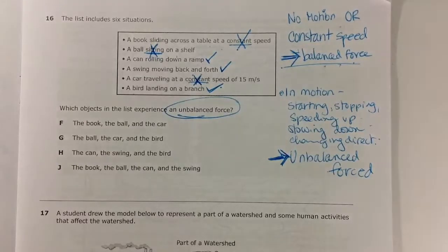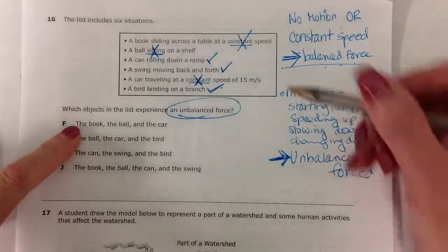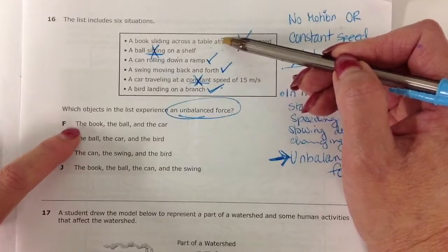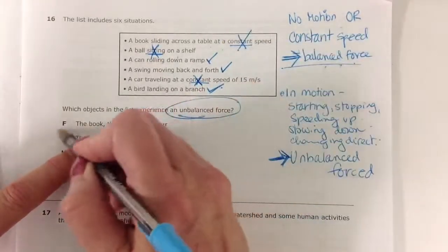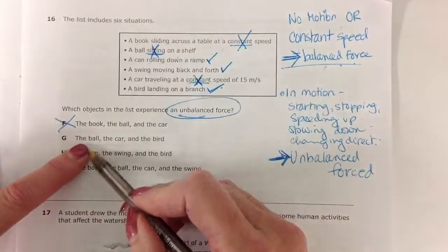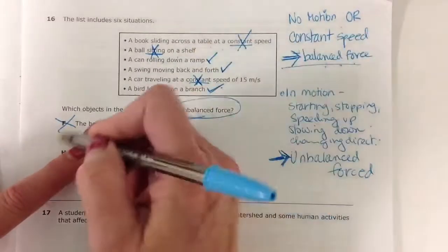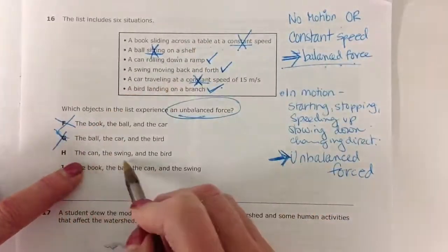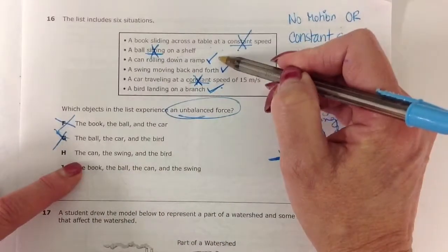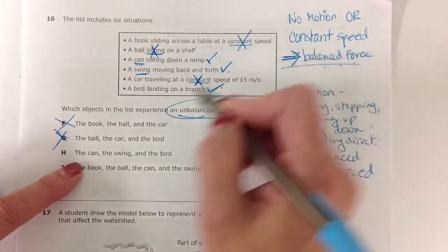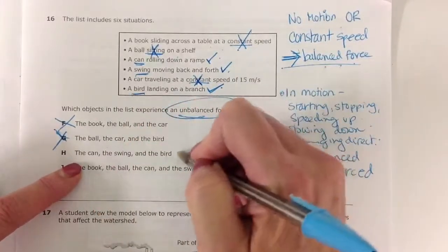Let's see what we can choose here. So it says the book, not. So we can already knock that out. That's not going to happen. The ball, the car, and the bird. The ball is sitting, not. The can, the swing, and the bird. The can is rolling. The swing is moving, and the bird is landing.